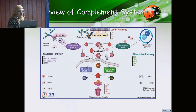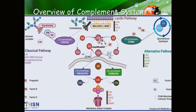Let's have a quick overview of the complement system. The complement system is constituted by soluble and membrane-bound proteins that respond to alarm signals and, through a proteolytic cascade, generate a plethora of immune effectors. The main triggers are: the classical pathway, where C1 binds with the IgM or IgG immune complex; the alternative pathway, involving spontaneous and continuous hydrolysis of C3; and the lectin pathway, where mannose-binding lectin binds to carbohydrate moieties of bacteria rich in mannose.